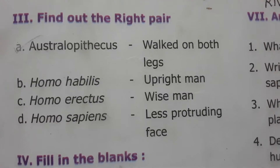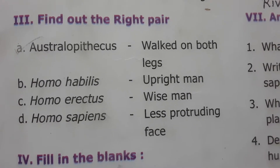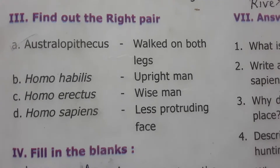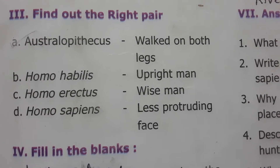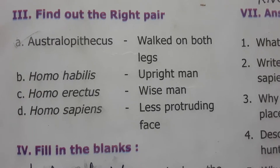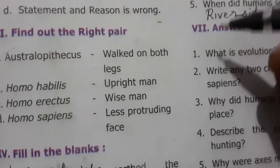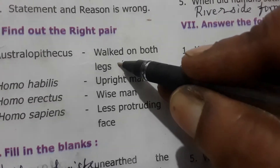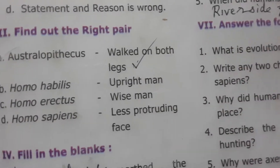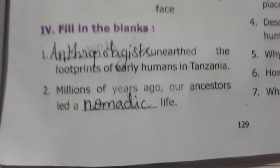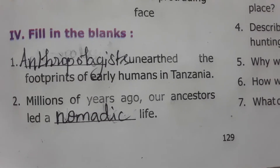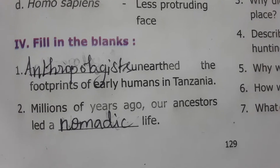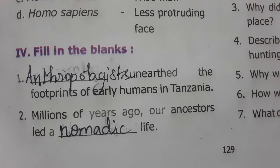Find out the right pair: Australopithecus walked on both legs — Australopithecus is the correct pair because they walked on both legs. The first man who walked on both legs was Australopithecus. Fill in the blanks: Anthropologists unearthed the footprints of early humans in Tanzania.